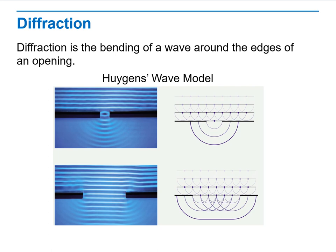This is Huygens's wave model. These waves spread out in the forward direction at the speed of the wave, creating a new wave front tangent to all of the wavelengths.